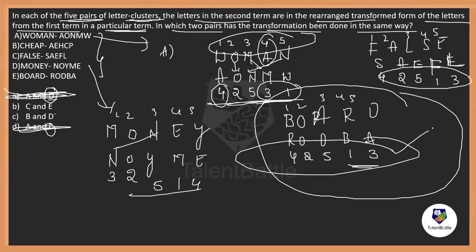Four, two, five, one, three. These both matches. What's the answer? Option B. Which of the rearrangement happened in the same manner? We are supposed to identify that. They gave us the letter clusters here. We need to identify where the rearrangement is in the same order. It's option B. One, two, three, four, five is arranged like four, two, five, one, three in both of these options.